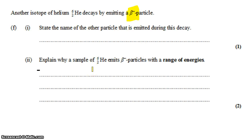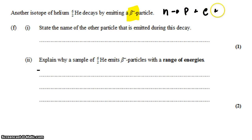From what we know of beta decay, if you have beta minus, that's an electron. So in beta minus decay, a neutron decays into a proton and an electron. But also one other thing. The proton that's formed in this beta minus decay — let's just write this out — the neutron becomes a proton and an electron and something else.